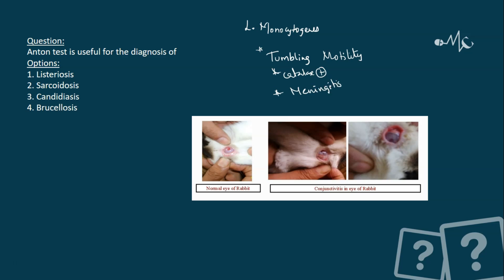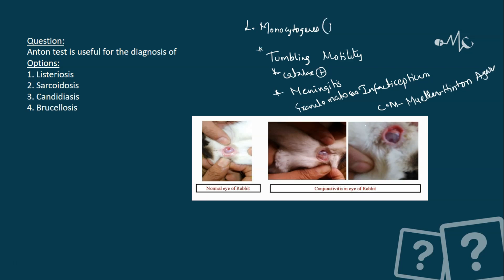Listeria mainly causes meningitis — it is the third most common cause of meningitis, particularly neonatal meningitis. It also causes granulomatosis infantisepticum, wherein you see many pyogenic granulomas in the body. The characteristic culture media is Mueller-Hinton agar.